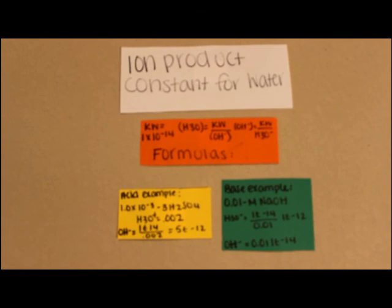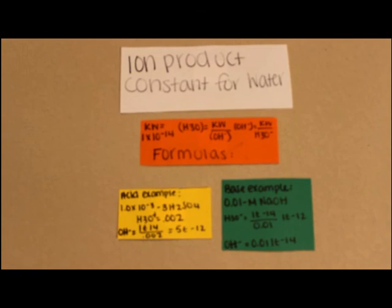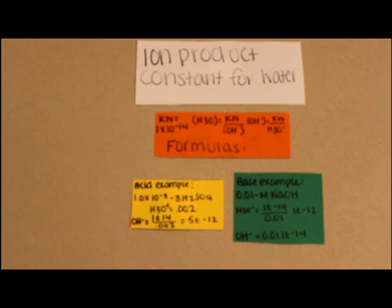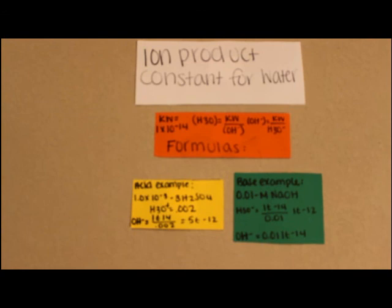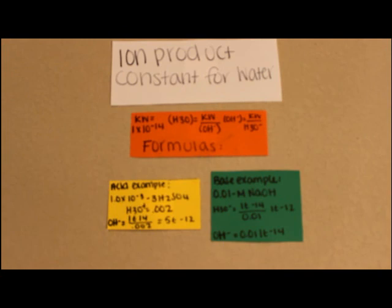Ion product constant for water. The formulas are: Kw equals 1 times 10 to the negative 14; H3O equals Kw over OH; or OH equals Kw over H3O. This is a reversible process that happens in every solution.